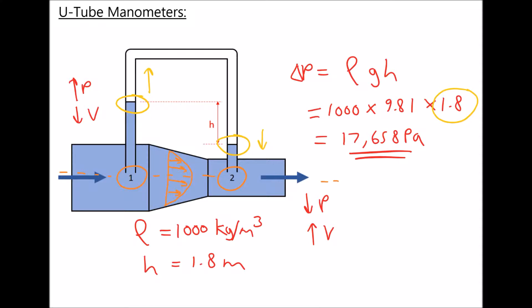Finally, we often use mercury in these devices because it is a high density fluid that can be used to measure greater pressure differences. However, a disadvantage of using mercury is that it is harmful and toxic, so we have to take quite a lot of care not to damage these devices. As they are primarily made from glass capillaries, they are still susceptible to damage.